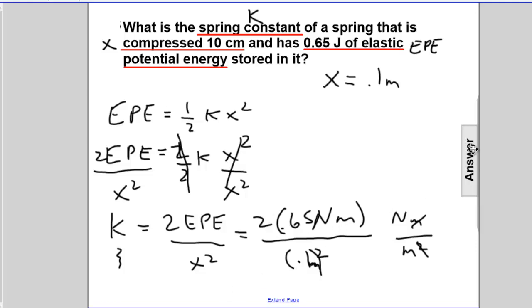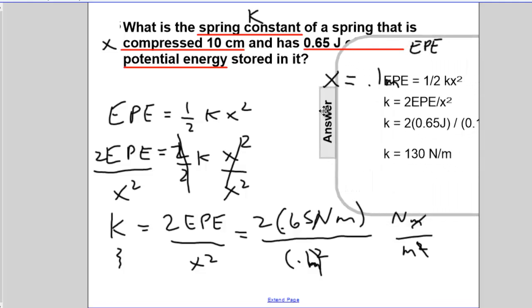Let's just, instead of doing the math, we can reveal the answer. 2 times 0.65 divided by 0.01, don't forget to square that, will give us 130 newtons per meter.